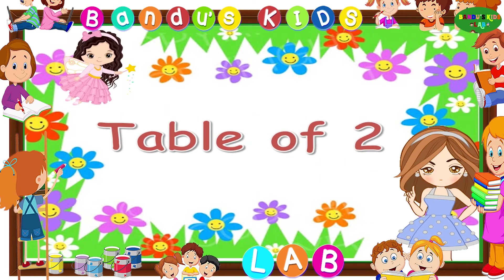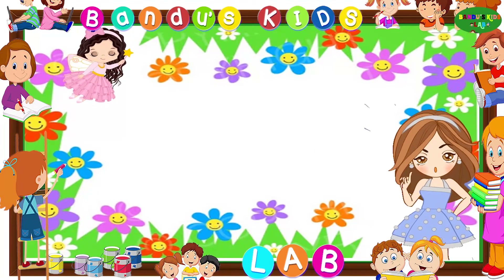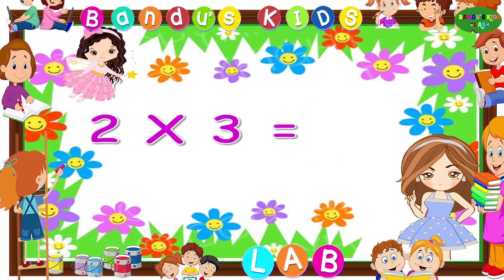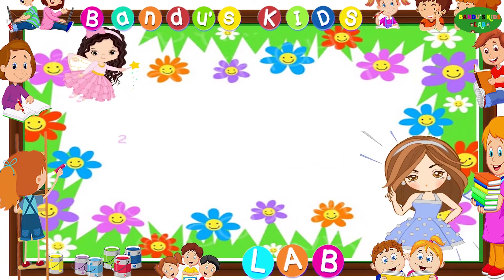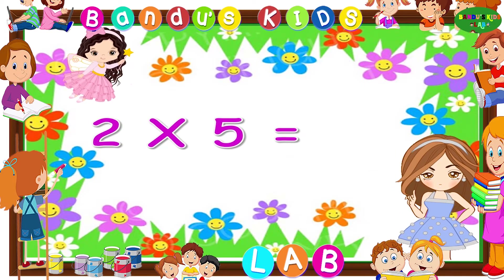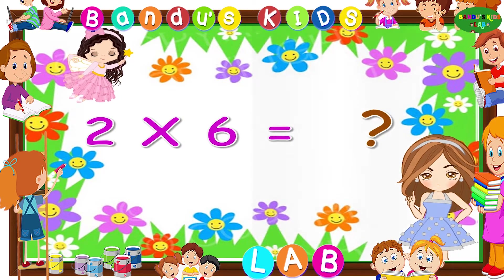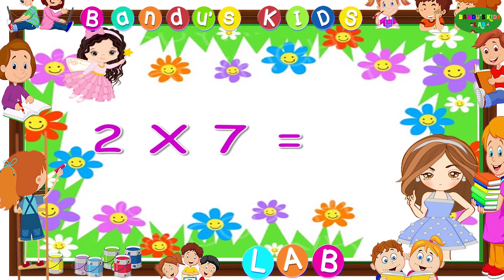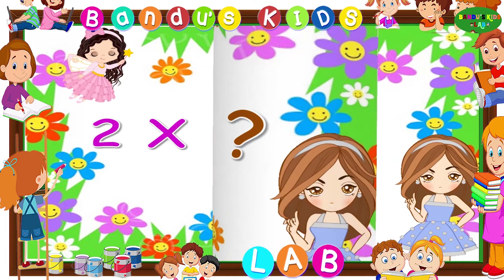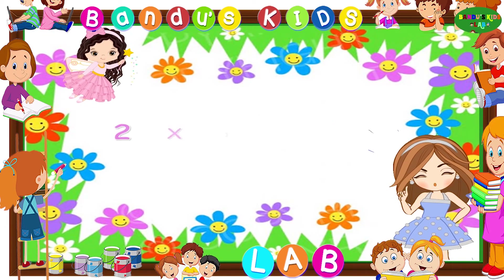Now it's your turn to say the table of two. Table of two. Two ones are... two twos are... two threes are... two fours are... two fives are... two sixes are... two sevens are... two eights are... two nines are... two tens are...